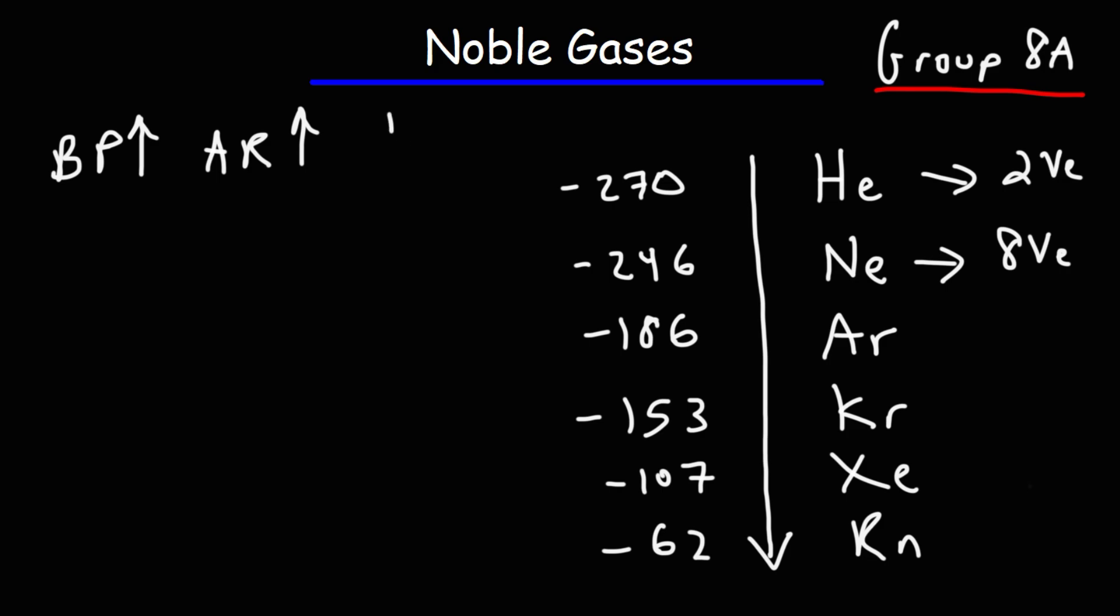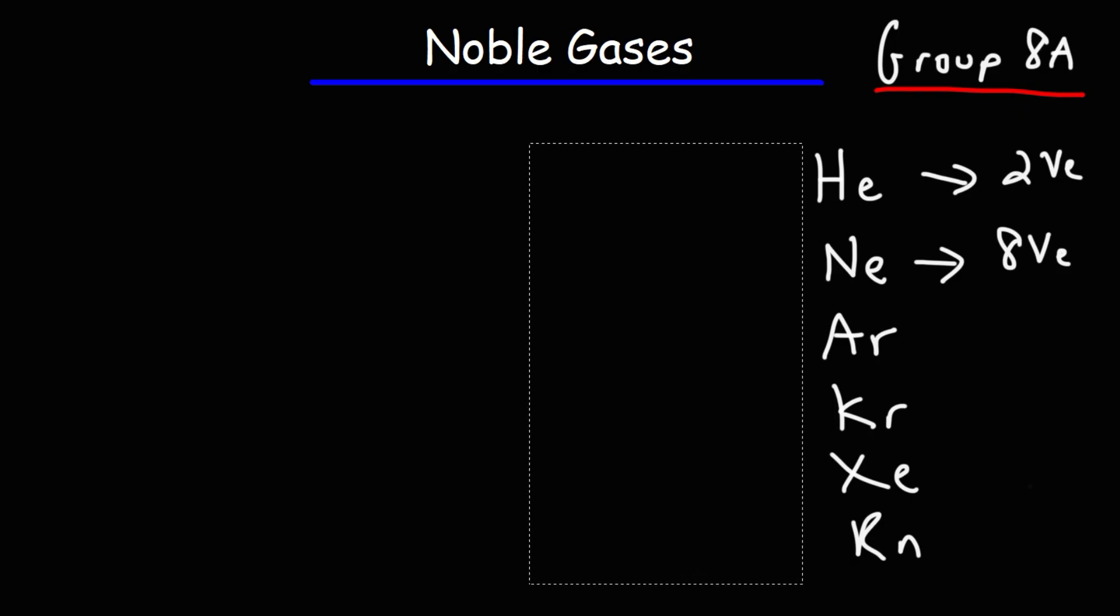Now as you go down the group, the density of these atoms increases as well. Xenon has a higher density than neon. Now these elements are monoatomic. They exist as single atoms. So helium is monoatomic. We don't have diatomic helium. Helium exists just as a single atom.